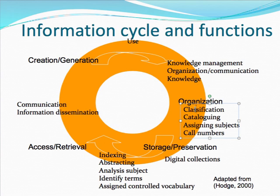How do we organize information? We have at least four things that we do: we classify information, we catalog information, we assign subjects, and we assign call numbers. The whole idea of librarianship is that we can organize, manage, and store information, but most importantly we can retrieve that information for our patrons.